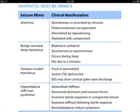Stimulus evoked myoclonus: focal or generalized, associated with CVS or CNS dysfunction. The EEG may show cortical spike-wave discharge — this is very important. In examinations like USMLE, MRCPCH, or Australian and Canadian board exams, they will give you the EEG finding for this, so remember the cortical spike-wave discharge on EEG.